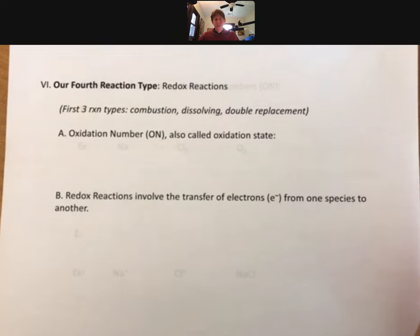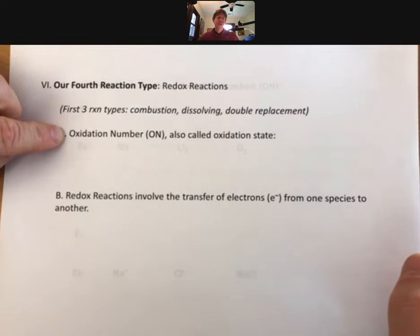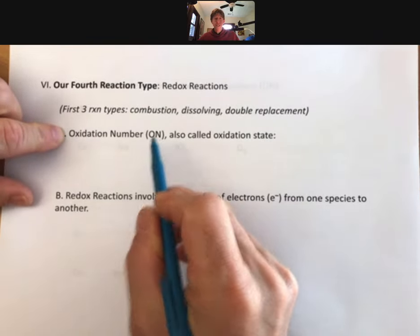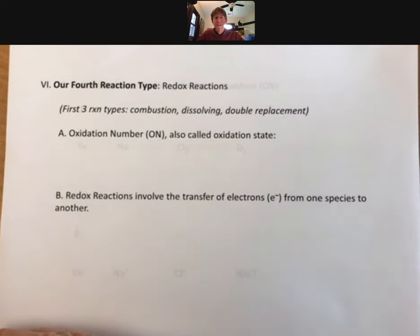Now let's talk about redox reactions. Before we can do the reactions, we're going to talk about a concept called the oxidation number. My abbreviation for oxidation number is capital O, capital N, and you'll also see it called the oxidation state.